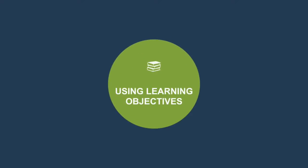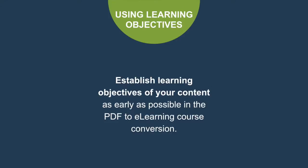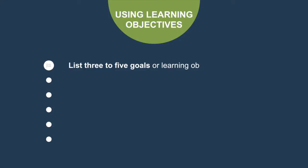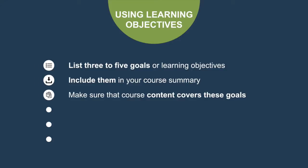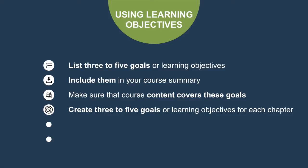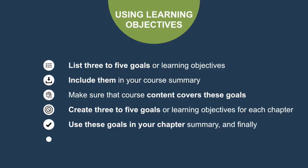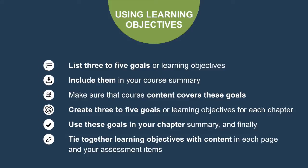Using Learning Objectives: establish learning objectives of your content as early as possible in the PDF to E-Learning course conversion. List 3-5 goals or learning objectives and include them in your course summary. Make sure that course content covers these goals. Create 3-5 goals or learning objectives for each chapter and use these goals in your chapter summary. Finally, tie together learning objectives with content in each page and your assessment items.